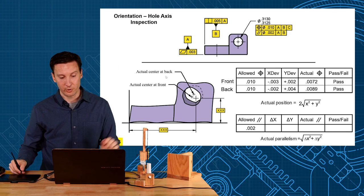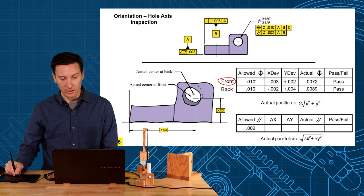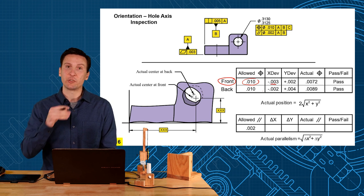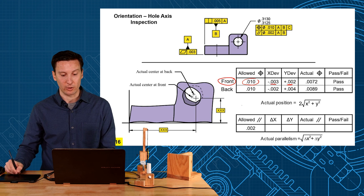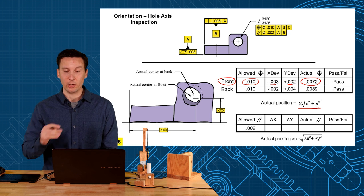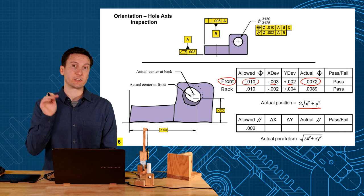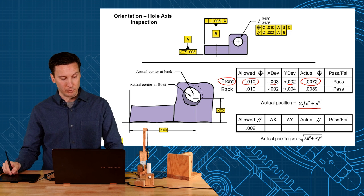And that's what we've done in this top view here. We have the front of the hole. The allowed tolerance was the 10 thou position. And we measure those deviations. How much is it deviated from true? Minus 3 in the x plus 2 in the y. So remember our position zone that's calculated as 2 times the square root of your x deviation squared plus your y deviation squared. We covered that in unit 5. And that would be a pass.